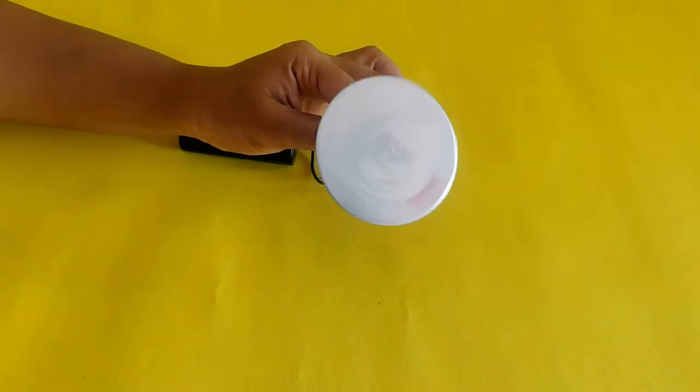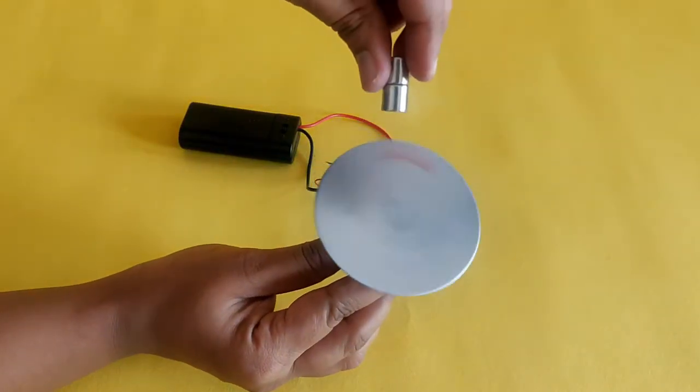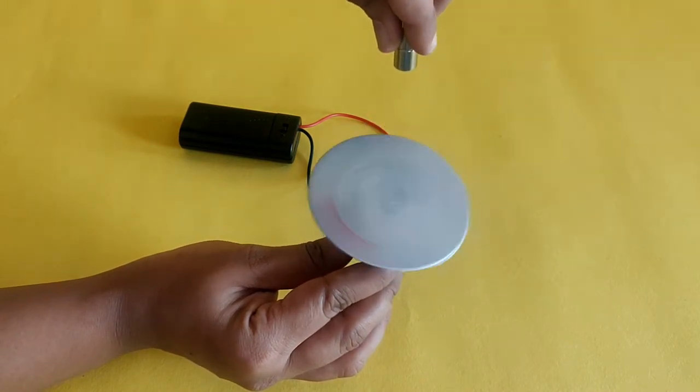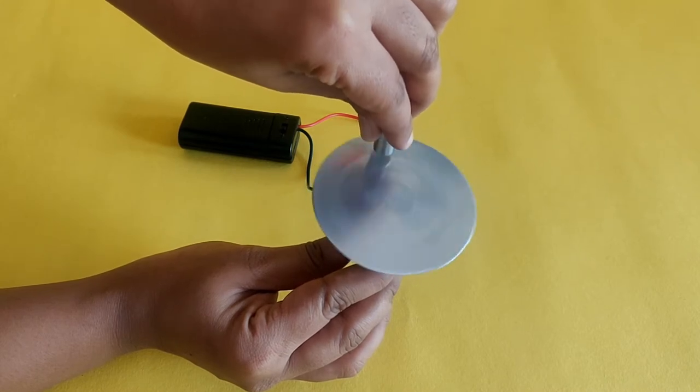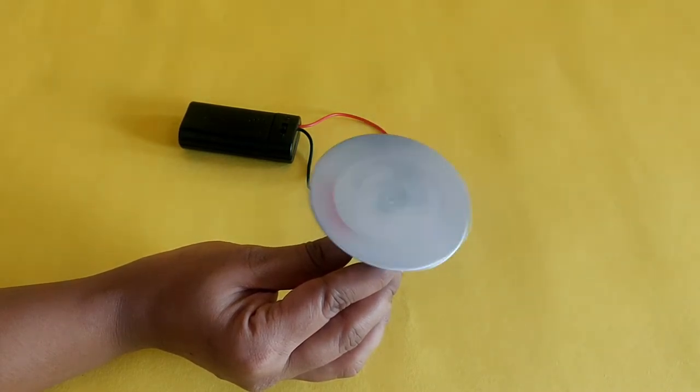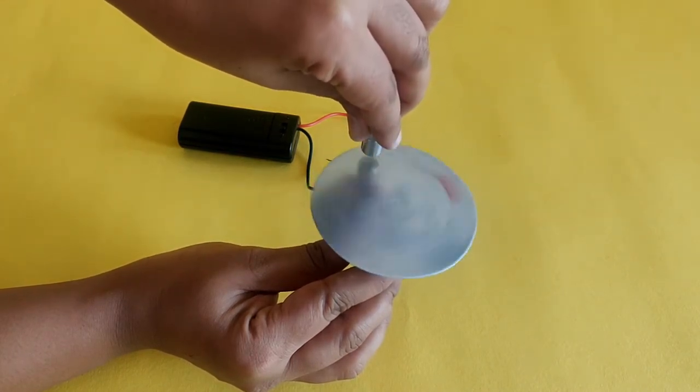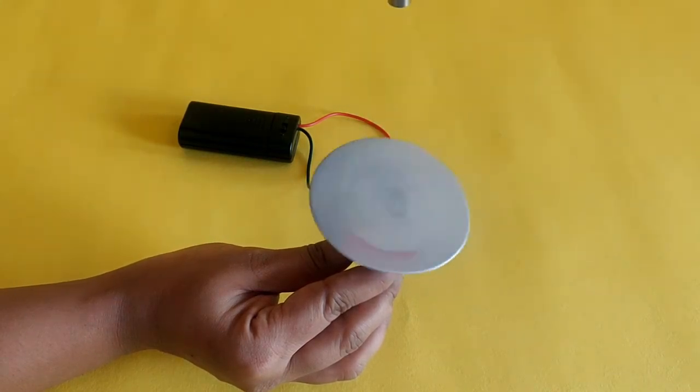Take one or two neodymium magnets close to the rotating aluminium disc without actually touching the disc. You will notice this causes the rotating disc to slow down.